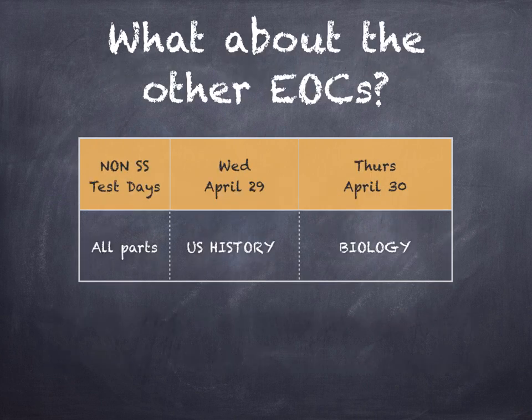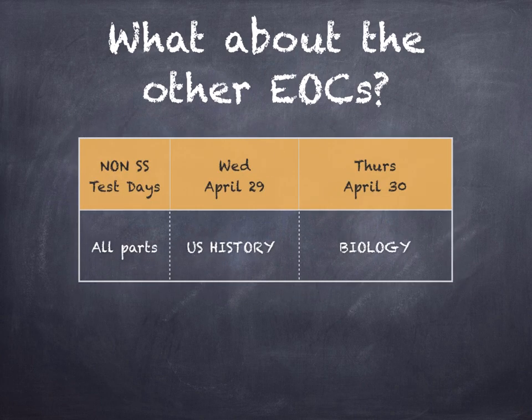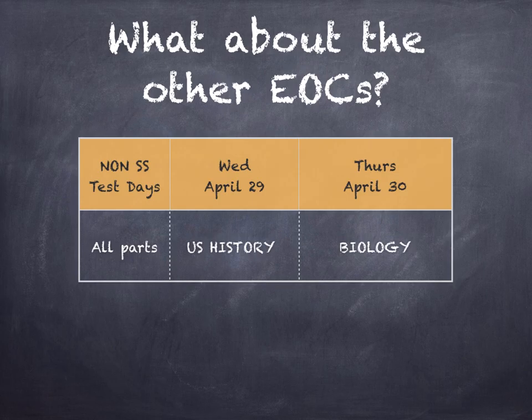So what about the other end of course exams? The U.S. History end of course exam will be given on Wednesday April 29th, and the Biology end of course exam will be given on Thursday April 30th. These are non-super session test days because these tests are given with all parts and do take longer than the time available during the super session days.